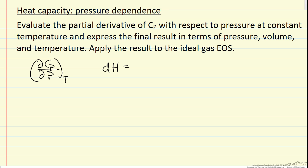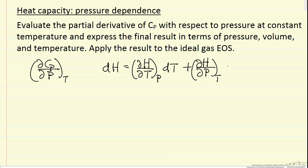We start with the differential of enthalpy. I can write that as the partial of H with respect to temperature at constant pressure times dT, and then the partial of H with respect to pressure at constant temperature times dP. You can see why I want to start with this because it's our definition of heat capacity — you change the enthalpy with temperature at constant pressure.